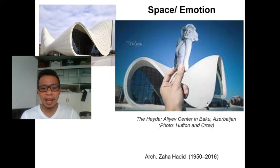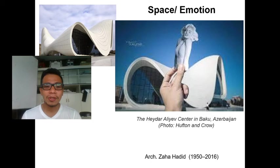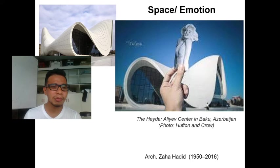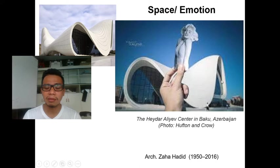One of Zaha Hadid's designs is the Heydar Aliyev Center in Baku, Azerbaijan. Her concept was the skirt of Marilyn Monroe — imagine thinking of that as a building concept. And the resulting design definitely reflects the flowing form of that skirt. It is one of my favorite architect's works.